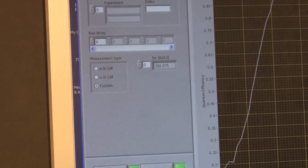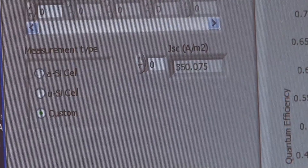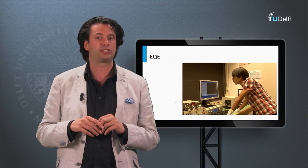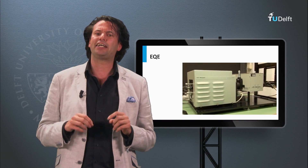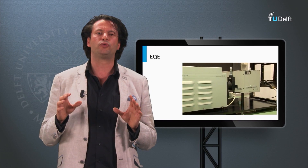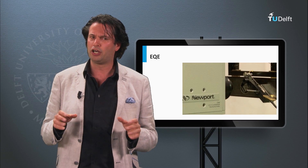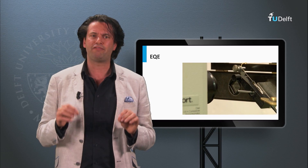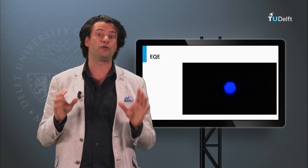In this case, the current density of the lab cell studied is 350 amps per square meter, or in a more practical unit on lab scale, 35 milliamps per square centimeter. It is important to realize that if you want to report short circuit current densities of solar cells, you cannot rely on a single JV measurement — they have to be measured using an EQE setup.